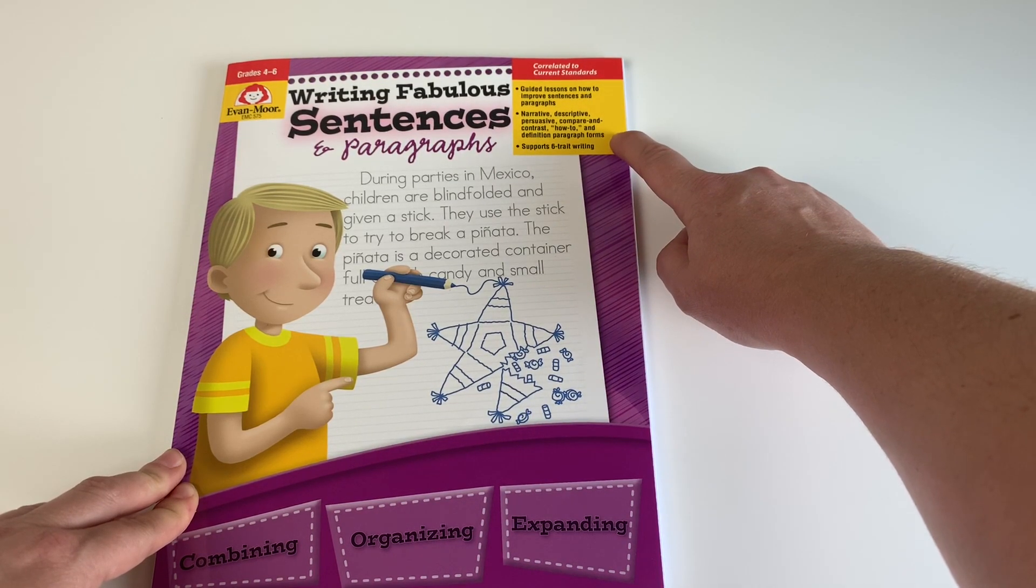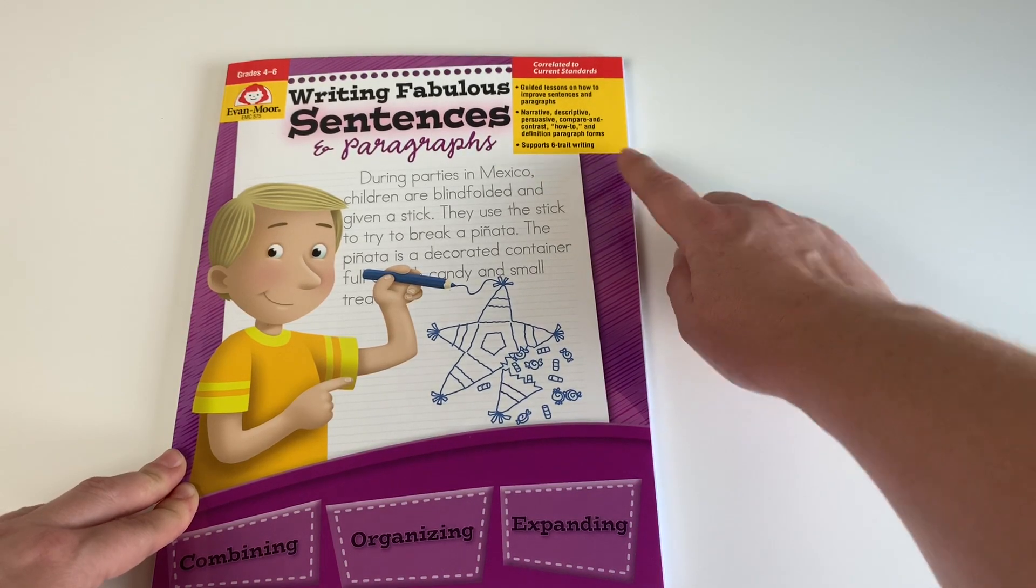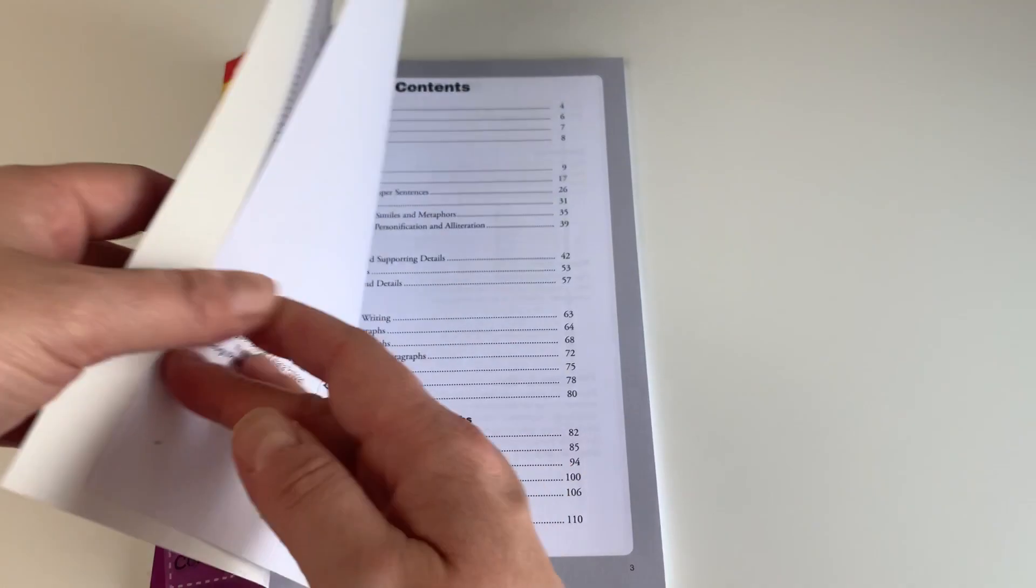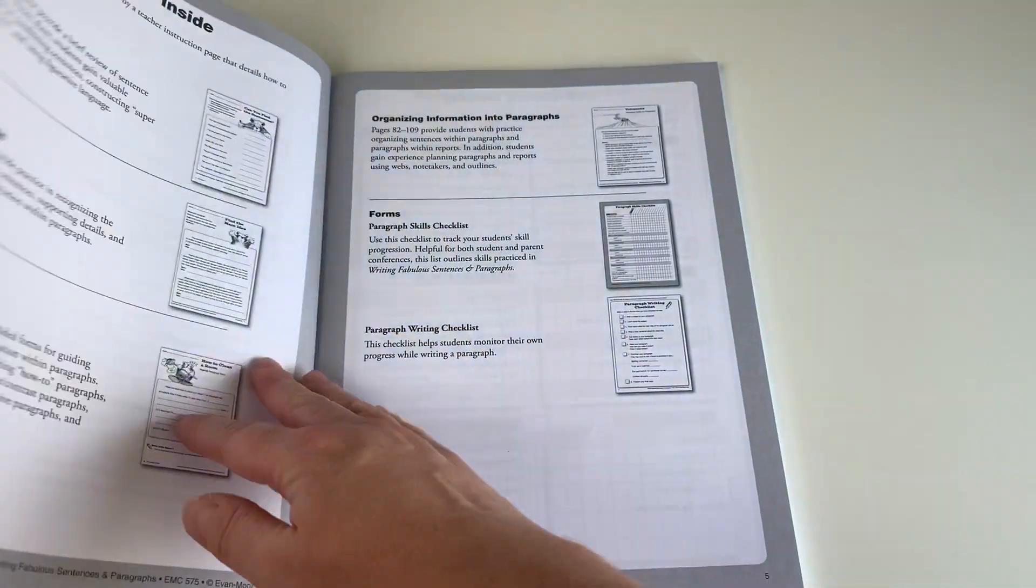It has guided lessons on how to improve sentences and paragraphs: narrative, descriptive, persuasive, compare and contrast, how-to, and definition paragraph forms, and it supports six trait writing. So this is basically going to help her make better, more descriptive sentences.